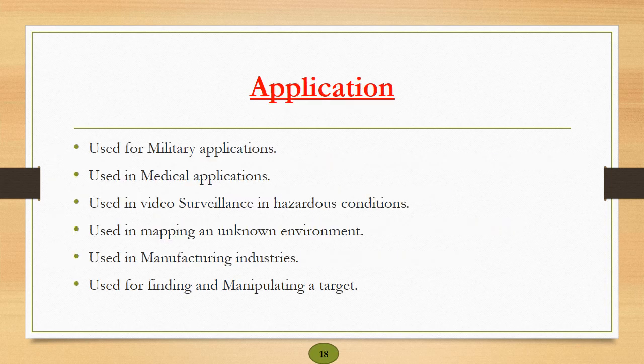These are the applications of a swarm robotic system. Swarm robots can be used in military applications, medical applications, for video surveillance in hazardous conditions. They can also be used for mapping an unknown environment. They are used in manufacturing industries for finding and manipulating a target.